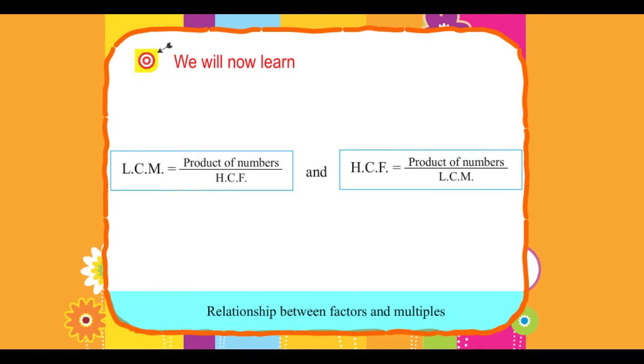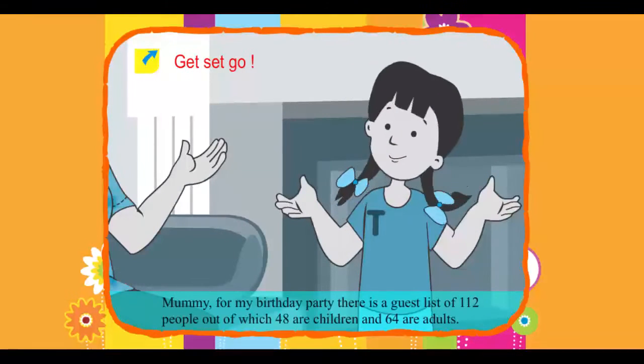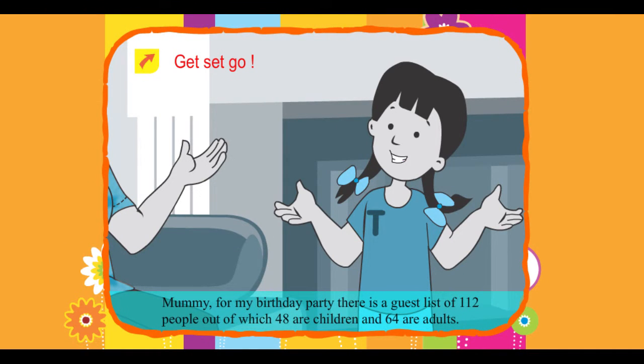Relationship between factors and multiples. Get set go! Tina: Mommy, for my birthday party there is a guest list of 112 people, out of which 48 are children and 64 are adults.